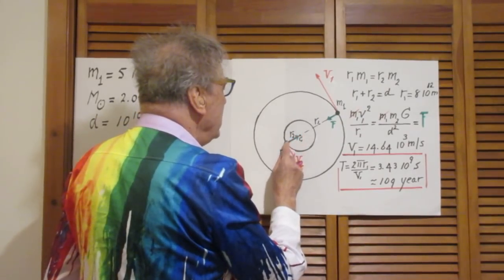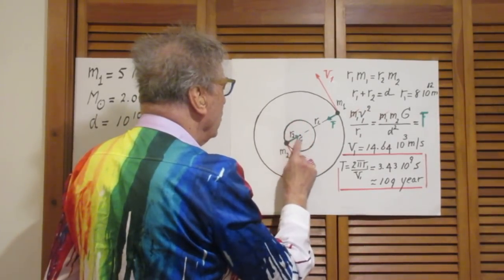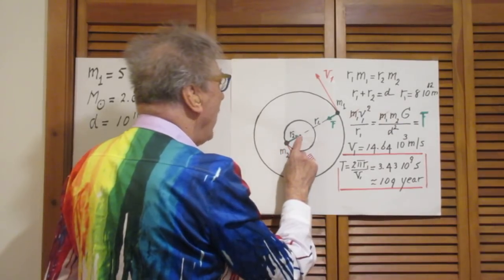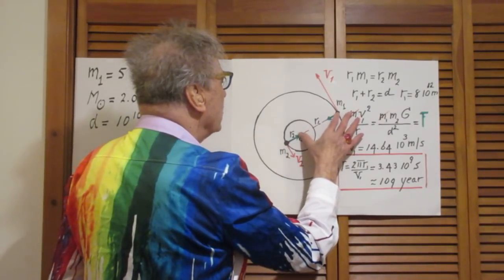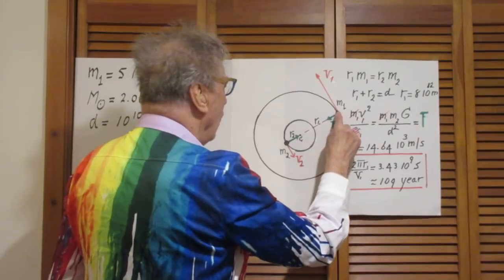This is the radius of this orbit, r2, the distance to the center of mass. And this is the radius r1 of m1.